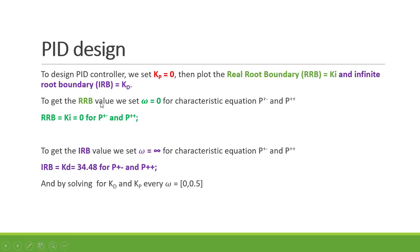We set omega equal to zero for each of the plus-negative and plus-plus characteristic equations. After calculation, we find that RRB is equal to zero for each of the plus-negative and plus-plus cases. To get the IRB value, we set omega equal to infinity for each characteristic equation. IRB is equal to infinity for each of the plus-negative and plus-plus cases.